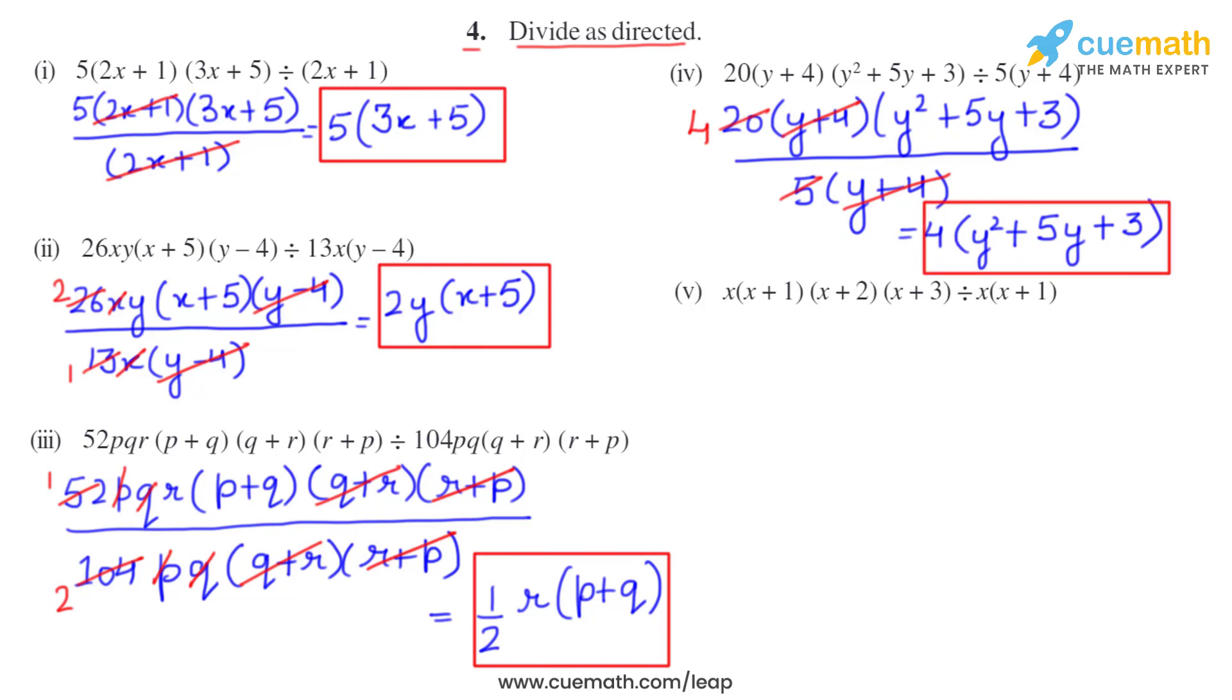Let's do the fifth last part: x(x+1)(x+2)(x+3) divided by x(x+1). So we can directly cancel out x. We can directly cancel out x+1. We are left with x+2 into x+3. So x+2 into x+3 is the final answer for the fifth part.